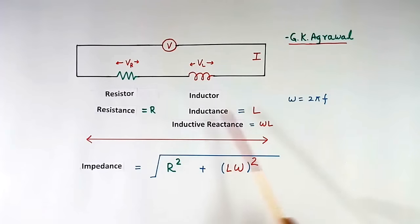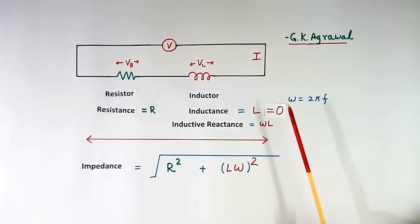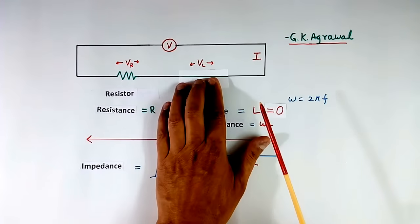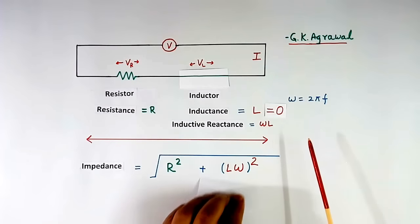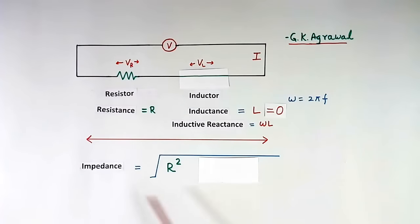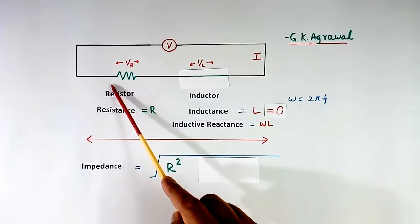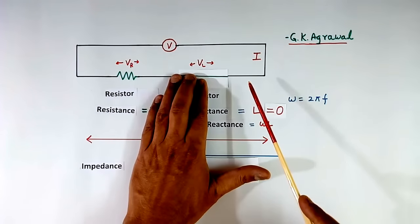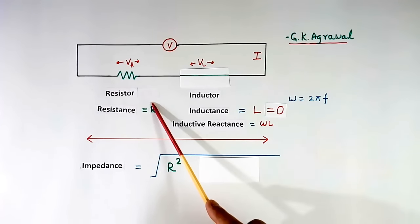Now suppose instead of R, L is 0. When L becomes 0, ωL also becomes 0, and the inductor will look like a short. So the ωL term disappears. Impedance will be equal to √(R²), the square root cancels, and only R remains — that is equal to resistance. So when L is 0, impedance and resistance are equal, and will be equal to R.